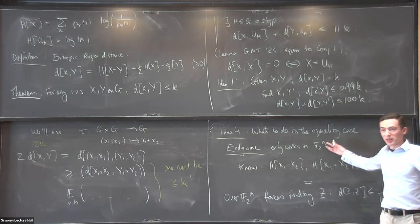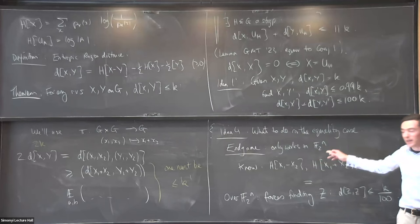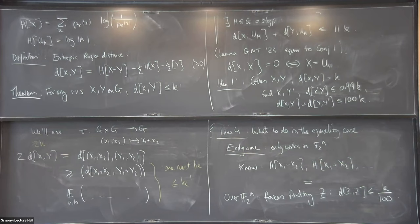Over F2^n, this forces the existence of some random variable Z that is much closer to being a subgroup than you first thought. I'll avoid saying more about the end game. If you want to prove this for FP^n, this is where you come unstuck — the end game no longer works because you can't just replace plus with minus. You need a new end game — that's why one result is on the archive and the others aren't yet.